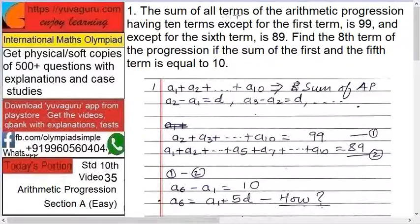The sum of all terms of the arithmetic progression having 10 terms, except the first term, is 99, and except the sixth term is 89. Find the eighth term of the progression if the sum of the first and the fifth term is equal to 10.